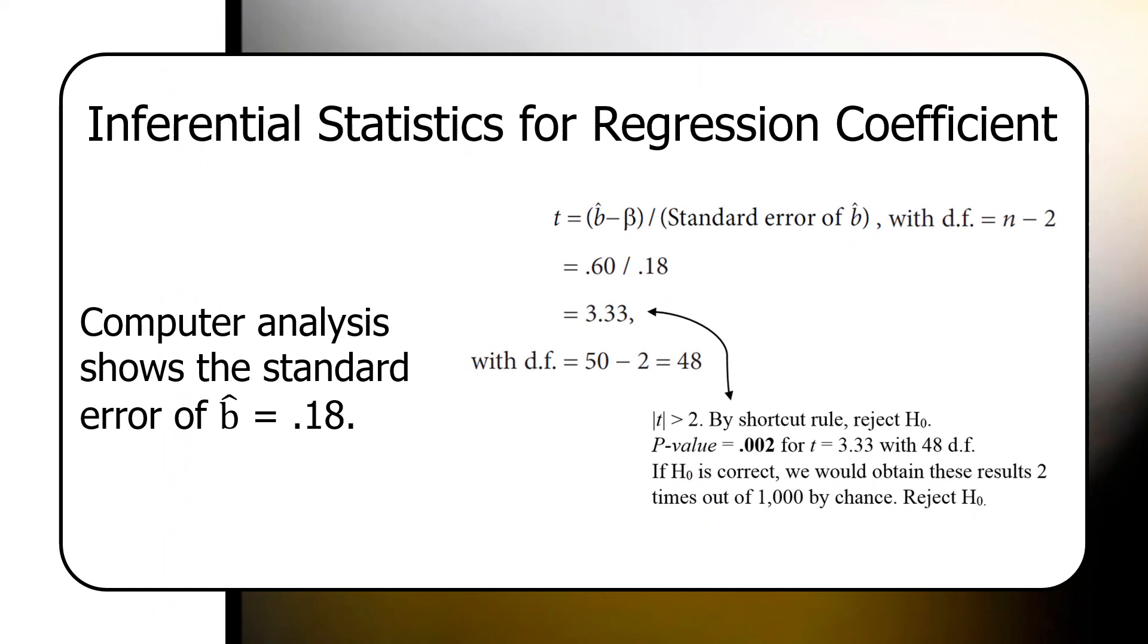95% of all possible regression coefficients in the population, all possible mean differences for every one unit change in college graduates are going to fall between .6 minus 2 times .18, which would be about .24. That would be the low end estimate for the effect of college graduates on turnout. Or .60 plus .36, which would be .96.